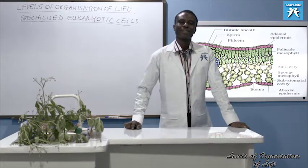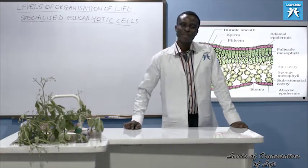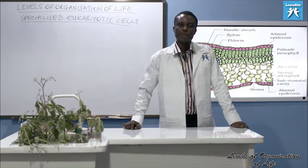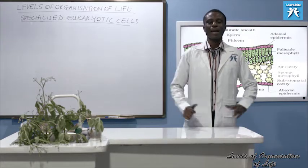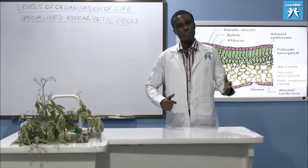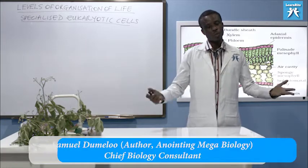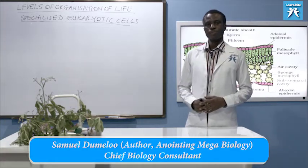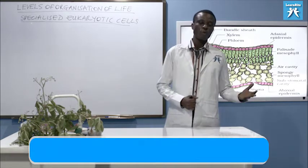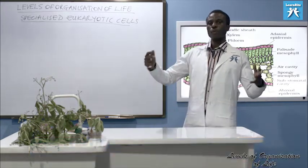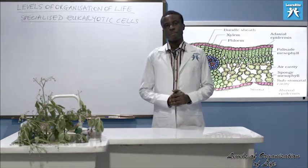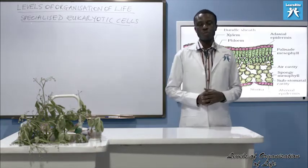Hi students, welcome to Lennaro Biology. I hope you are doing very well. We've just done with specialized eukaryotic cells in animals. We looked at the spermatozoa, erythrocyte, red blood cell, and the neuron. We also touched on the muscle fiber, rods and cones.